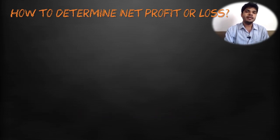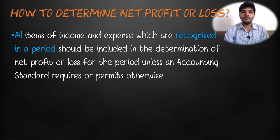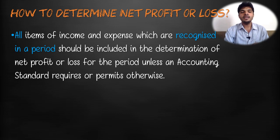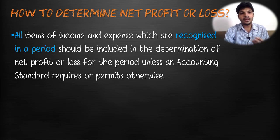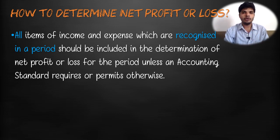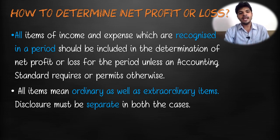To determine net profit or loss, all items of income and expense which are recognized in a period should be included in the determination of net profit or loss for the period, unless an accounting standard requires or permits otherwise. There is no difference between extraordinary and ordinary items as far as their inclusion in the financial statement is concerned, though disclosure will be required separately for both items. All items — ordinary as well as extraordinary — must have separate disclosure.